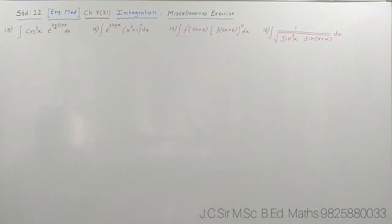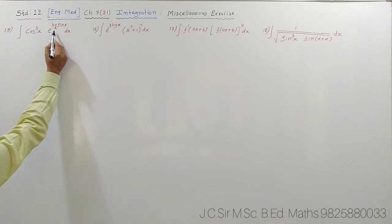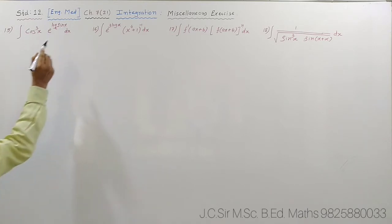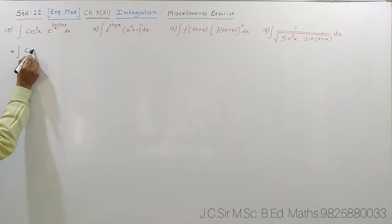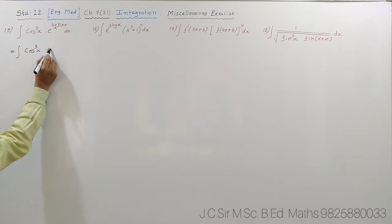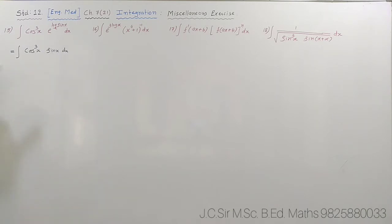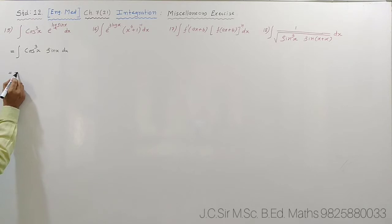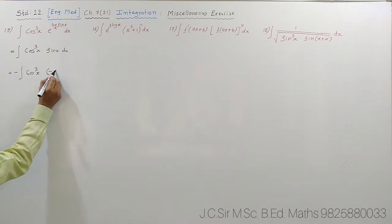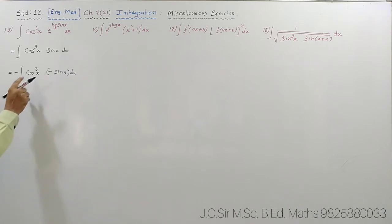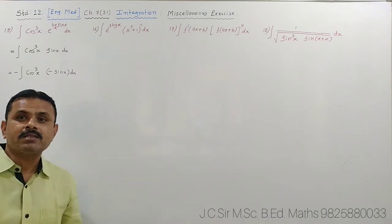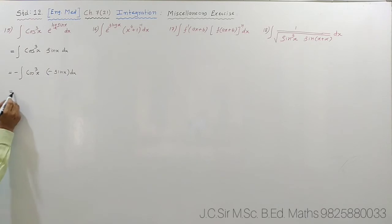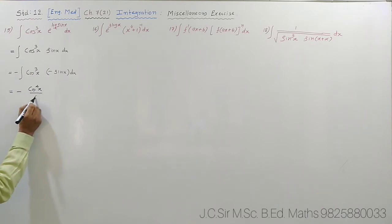Question number 15. See here, two bases are the same. So by the property of log, it will come down. The form will be cos³x as it is. After ignoring the exponent, the derivative will be there. The derivative of cos is minus sin — the minus is not a big deal. I multiply by minus 2 times. After ignoring the exponent, the derivative is in the multiplication. So the answer will be: −cos⁴x / 4 + C, which is our answer.